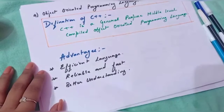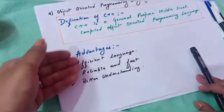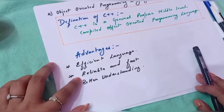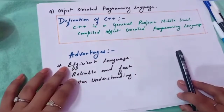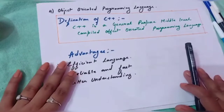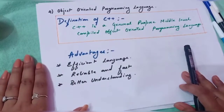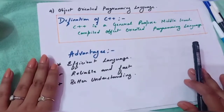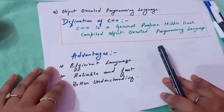Now we will see the advantages of C++. C++ is an efficient language — reliable and fast — and it offers better understanding; we can understand C++ very easily. With object-oriented programming languages, if we understand C++ clearly, other OOP languages will be easier to grasp. C++ is also the best option to learn the object-oriented programming approach. When you move to higher classes, there will be languages like Java, C#, and many more — if you know C++, you will easily understand those concepts too.